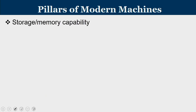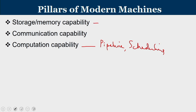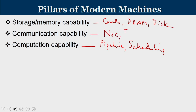As far as machine design is concerned, we need three important pillars that we have covered in this course. We started with the computation capability of the machine in terms of pipeline and scheduling. Then we learned about storage and memory capacity in terms of cache, DRAM, and disk.